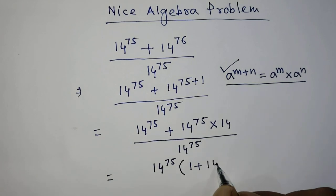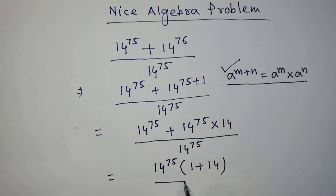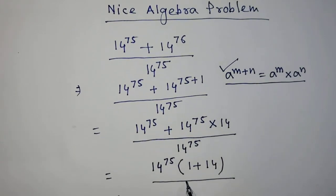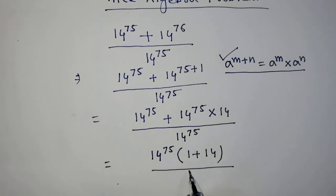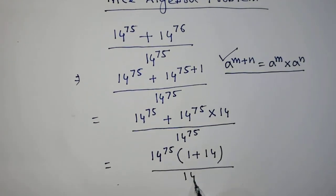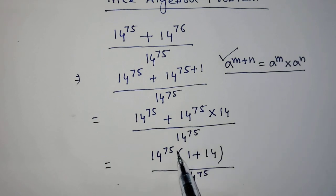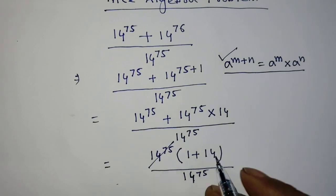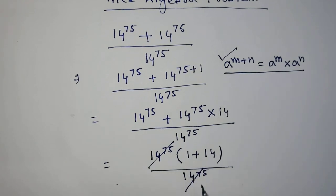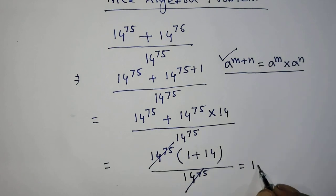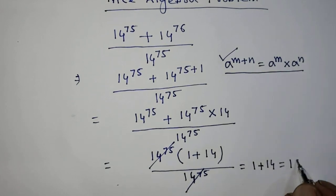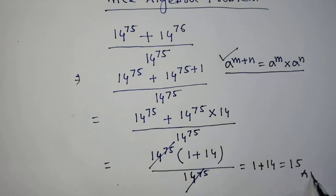Over 14 to the power 75 in the denominator. Now we can cancel 14 to the power 75 from numerator and denominator. Then it will be 1 plus 14, which equals 15. This is our final answer.